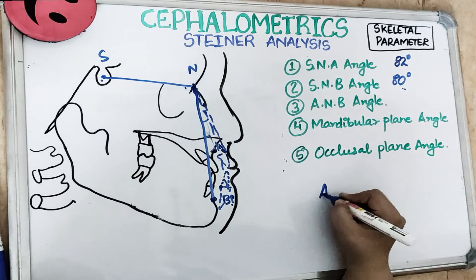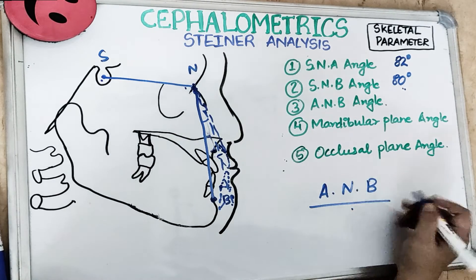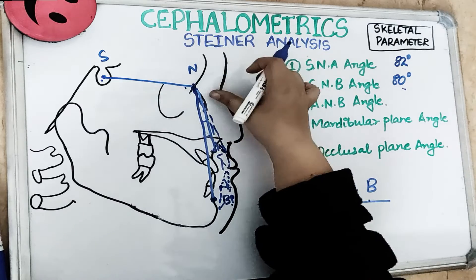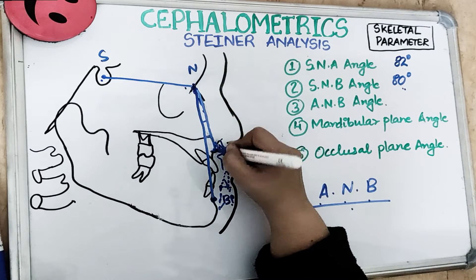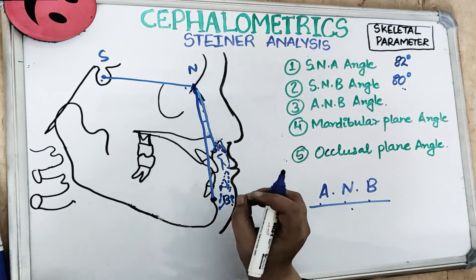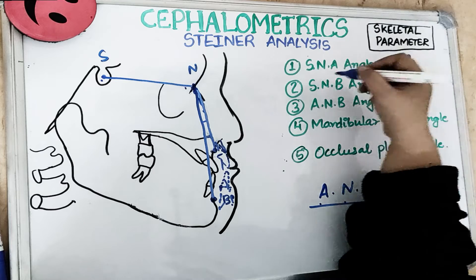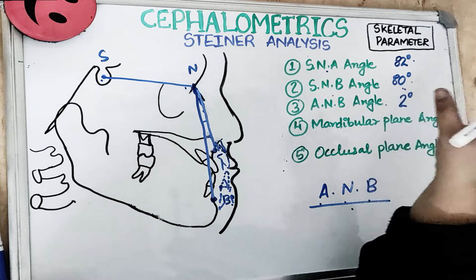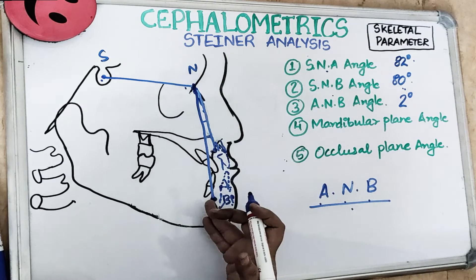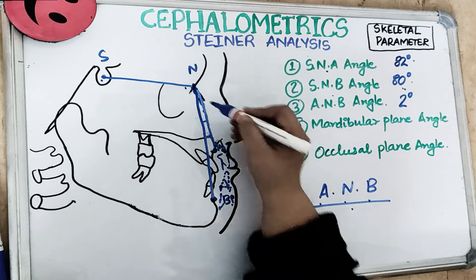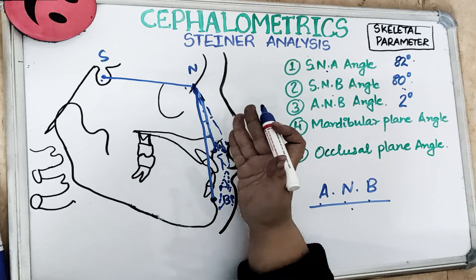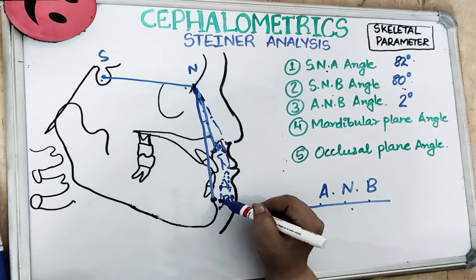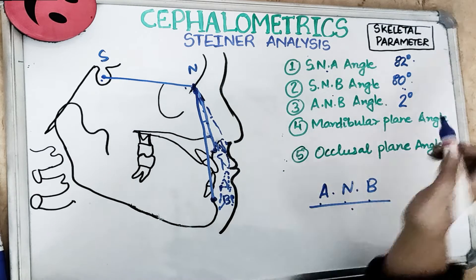The third angle is ANB, formed by joining points A, N, and B. Normally this is 2 degrees — which you can derive by subtracting SNB from SNA. The ANB angle is increased in class 2 malocclusion, where point A has shifted forward. It is decreased — less than 2 degrees — in class 3 malocclusion.